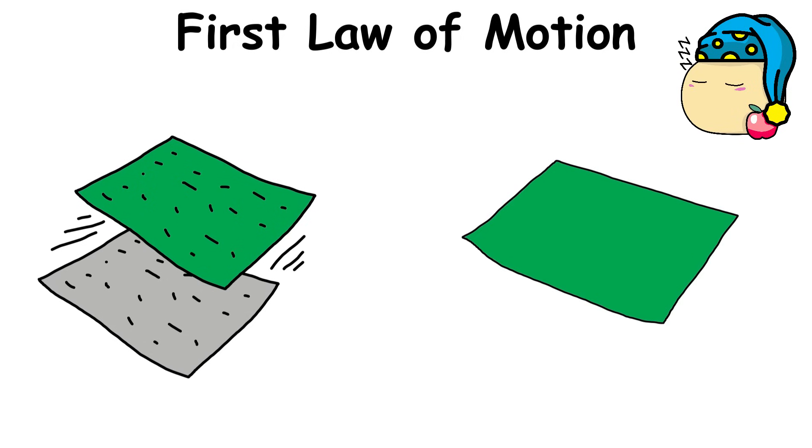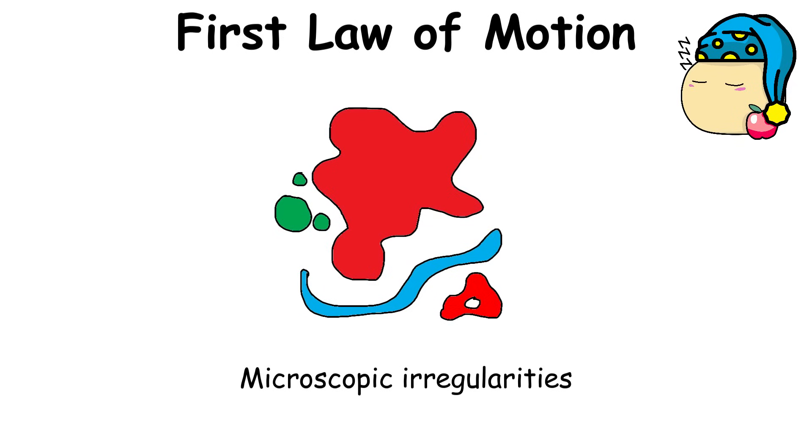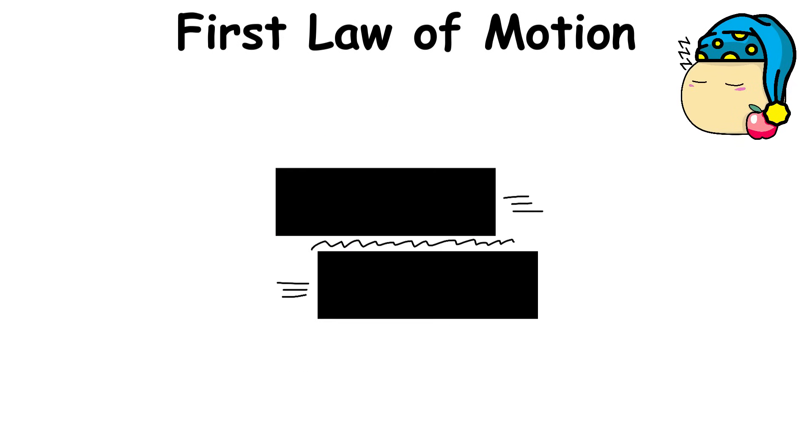Meanwhile, smoother surfaces are less likely to produce lots of friction, but still have microscopic irregularities that can still produce friction.